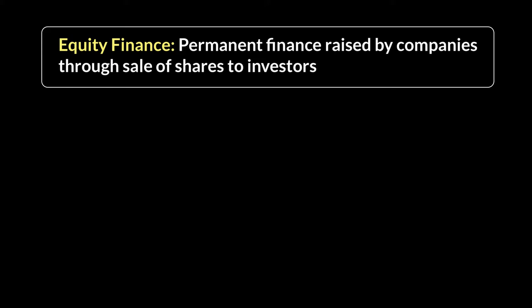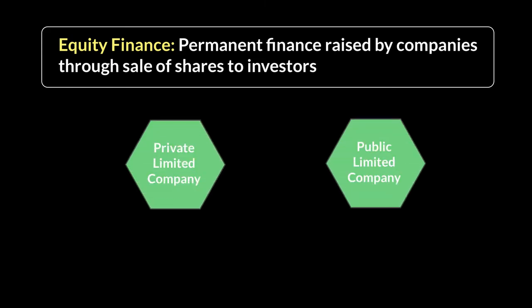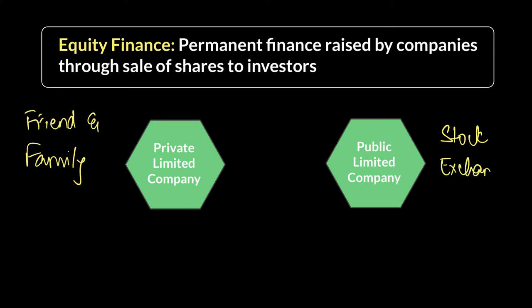Both public and private companies can sell shares. The difference is that private companies want to keep control within the company's own owners and therefore sell shares only to friends, family, and people they trust — a very close-knit system. A public limited company, on the other hand, looks to raise large sums of capital by selling shares on a stock exchange, where anyone from the general public can buy. So both can sell shares; the difference is who they're selling to.